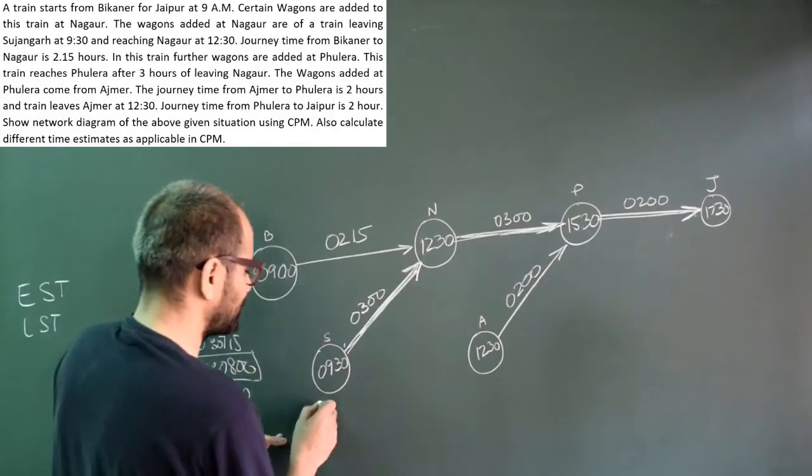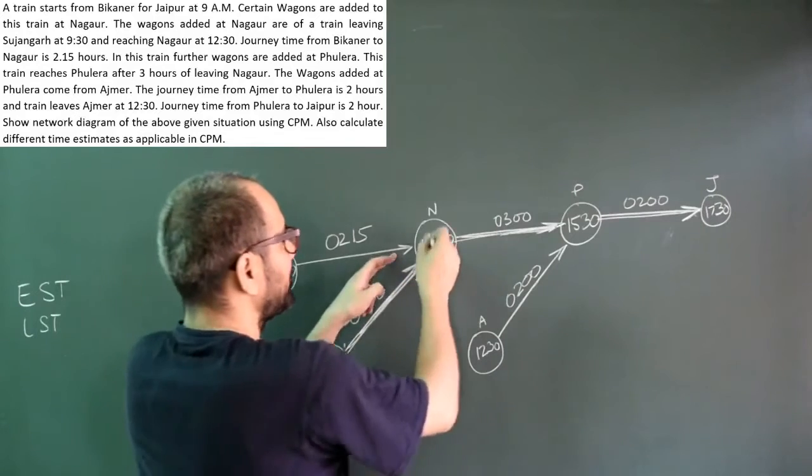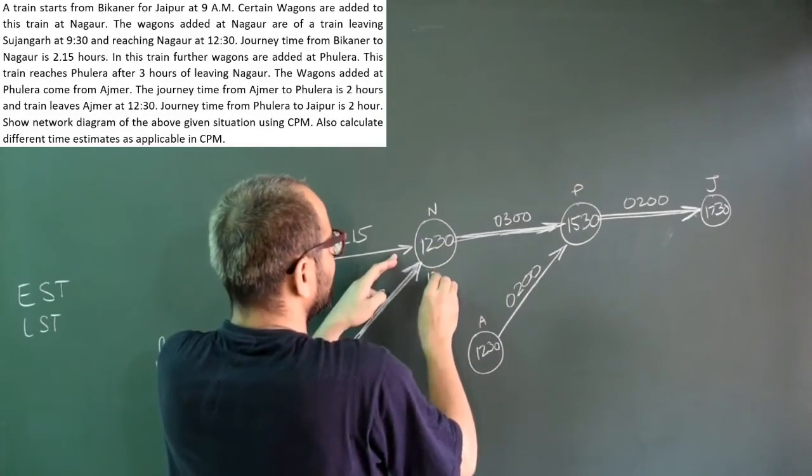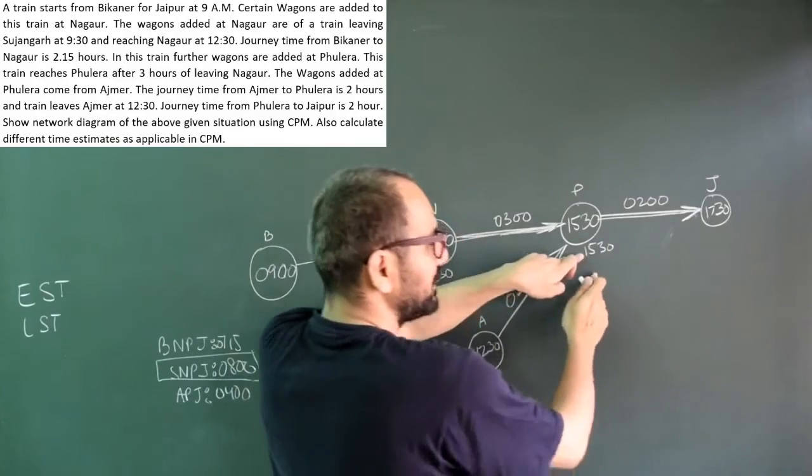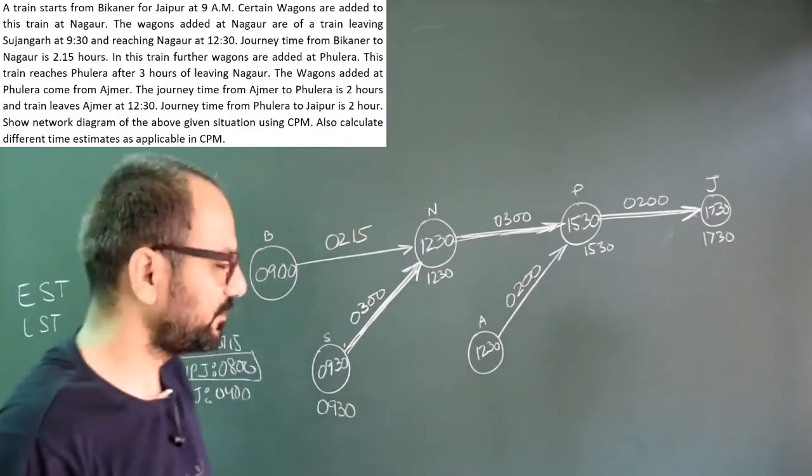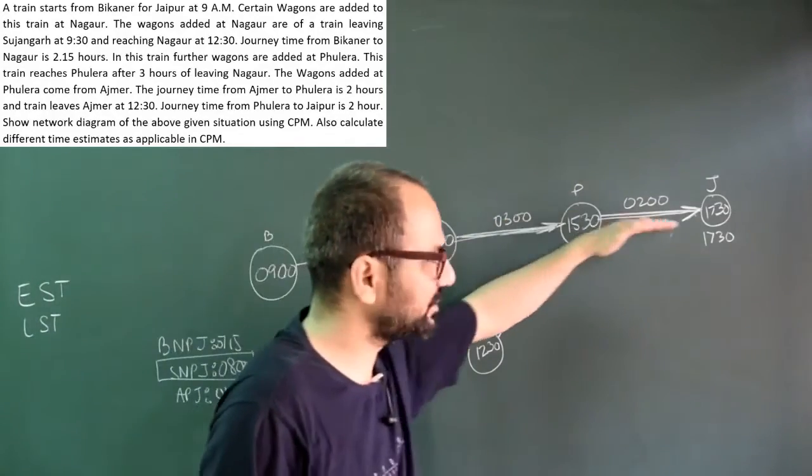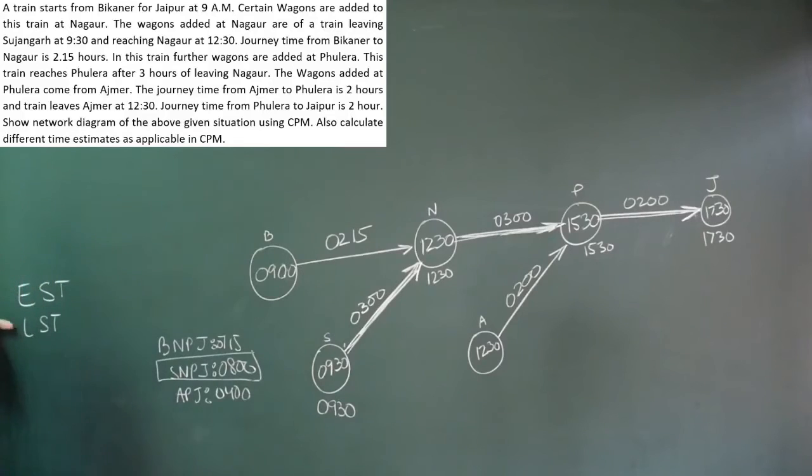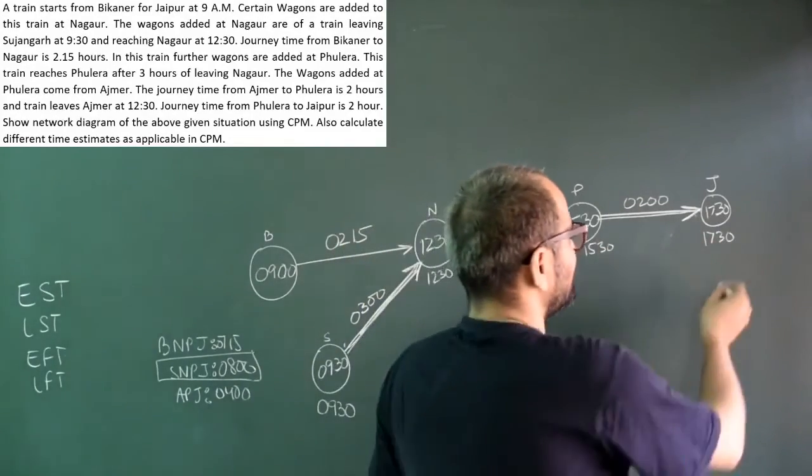Now we make a forward pass and a backward pass. Forward pass for earliest time. Suppose it starts at 9:30, takes 3 hours, it will be here by 12:30. 3 more hours, it will be here by 15:30. 2 more hours, it will be here by 17:30. This being a critical path, it has no slacks and floats. Its earliest times, earliest start times, and latest start times all become the same. So 9:30, 12:30, 15:30, 17:30.